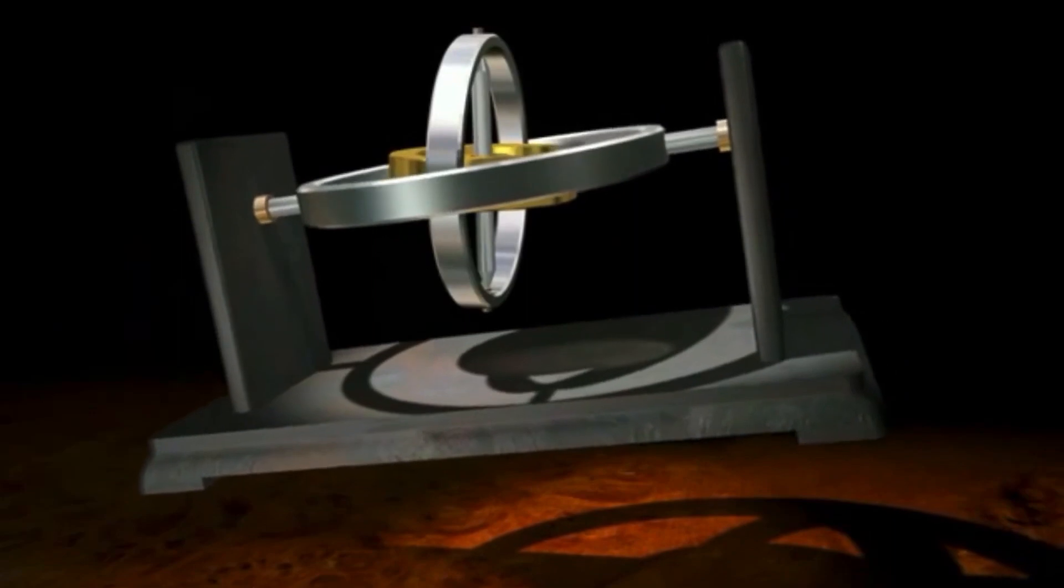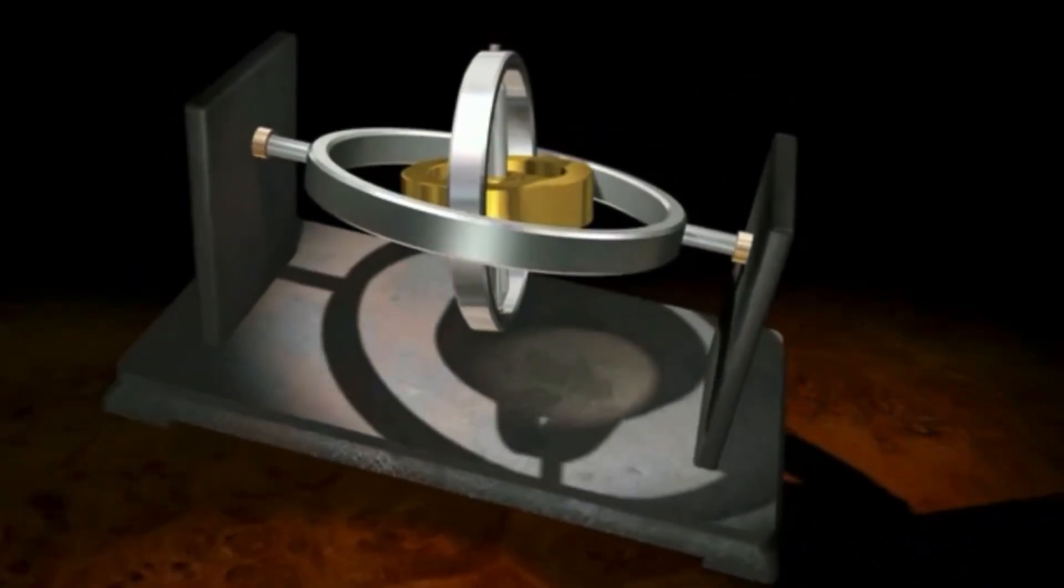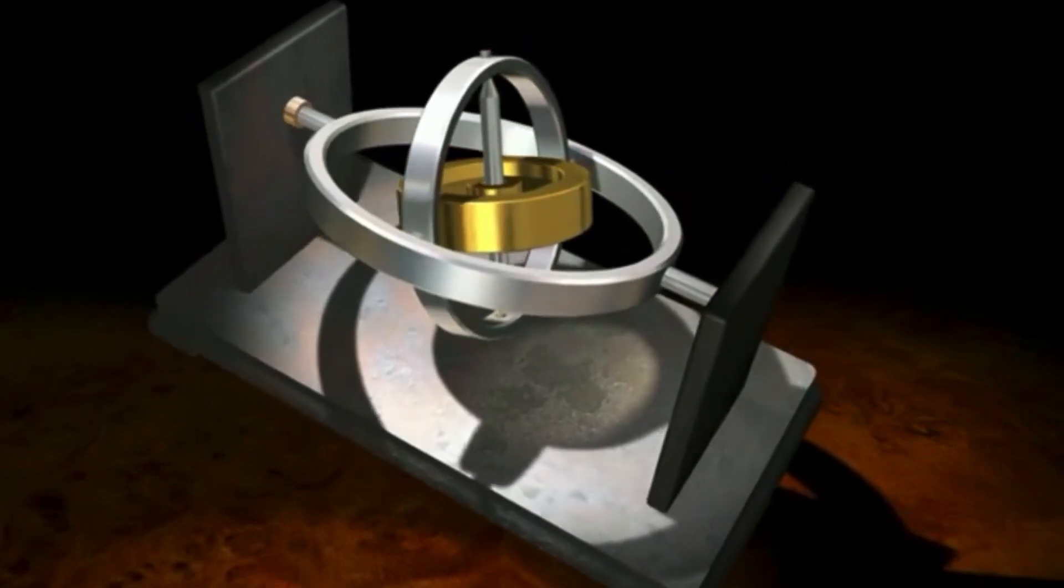It relies on the principle of rigidity in space, which allows a small gyro to spin in a horizontal plane about the vertical axis, resembling the Earth's horizon.